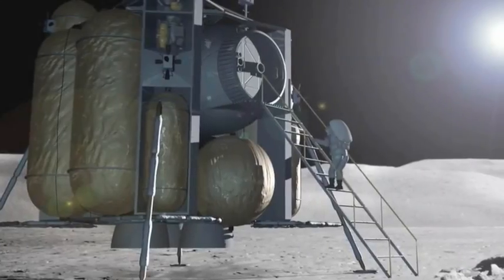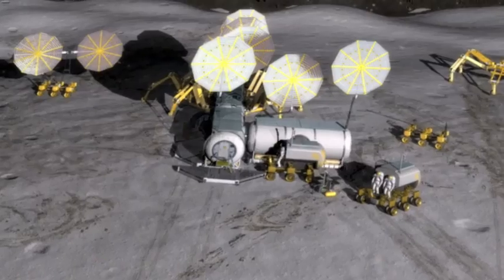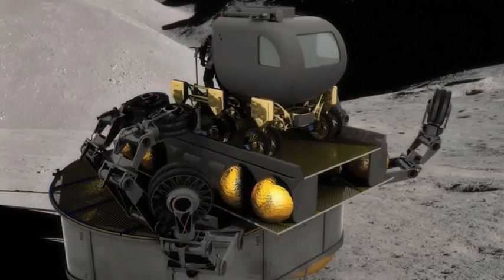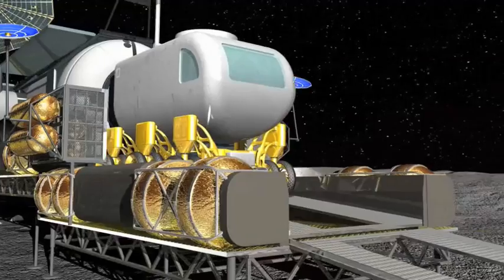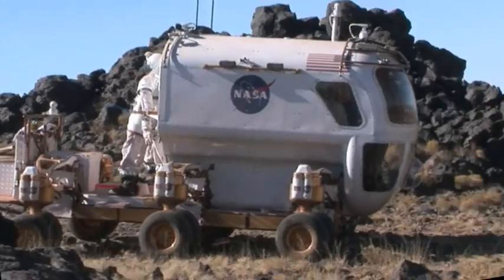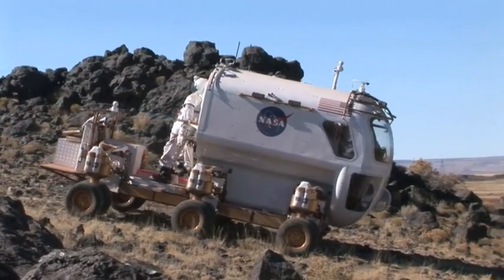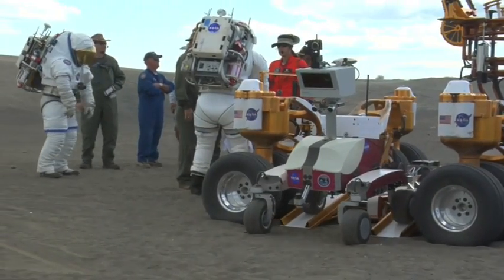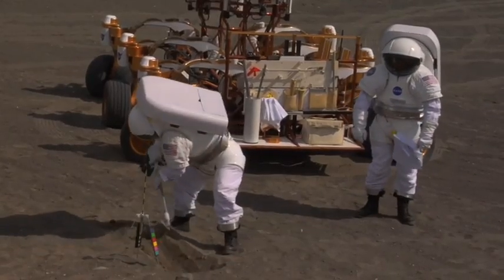NASA's plans to put outposts on the moon will require a whole lot of site preparation, including landing pads, roads, and foundations for habitats. So NASA scientists and engineers are working to create the tools that will build the infrastructure from resources already on the moon.